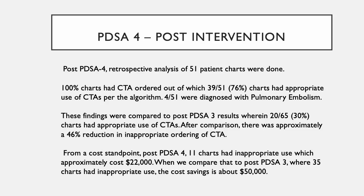These findings were compared to post-PDSA-3 results, where 20 out of 65 charts — 30% — had appropriate use of CTAs. After comparison, there was approximately a 46% reduction in inappropriate ordering of the CTA. From a cost standpoint, post-PDSA-4, 11 charts had inappropriate use, costing approximately $22,000, compared to post-PDSA-3, where 35 charts had inappropriate use. The cost savings were about $50,000.